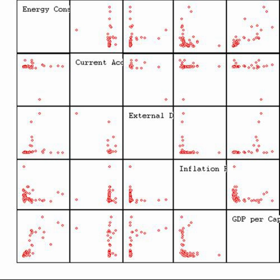Misuse of statistics can produce subtle but serious errors in description and interpretation—subtle in the sense that even experienced professionals make such errors, and serious in the sense that they can lead to devastating decision errors. For instance, social policy, medical practice, and the reliability of structures like bridges all rely on the proper use of statistics. Even when statistical techniques are correctly applied, the results can be difficult to interpret for those lacking expertise. The statistical significance of a trend in the data—which measures the extent to which a trend could be caused by random variation in the sample—may or may not agree with an intuitive sense of its significance. The set of basic statistical skills that people need to deal with information in their everyday lives properly is referred to as statistical literacy.